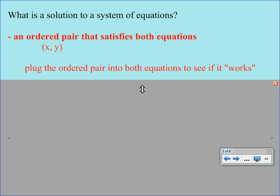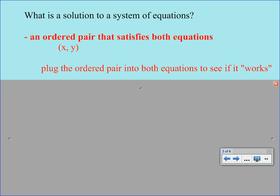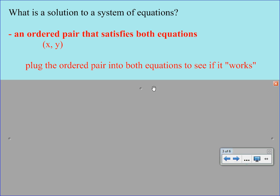So you would take the x value from the ordered pair and substitute it in, and you'd also take the y value and substitute it in. And then what you would do is simplify your equation, and if the two sides are the same, it would work. And notice that it has to satisfy both equations. It can't just satisfy one. It has to satisfy both.